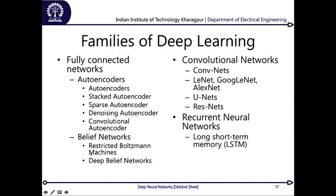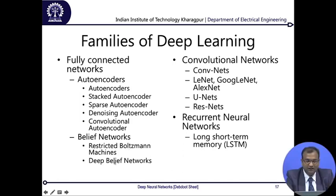The second fully connected network family is belief networks, which consists of the restricted Boltzmann machine and deep belief network. A deep belief network is basically a stacked version of the restricted Boltzmann machine. The Boltzmann distribution is imposed over there, giving these networks very good memory associativity. You can read about them in specialized literature; for our purposes we keep it to the minimum.